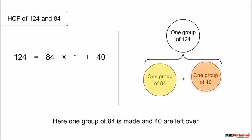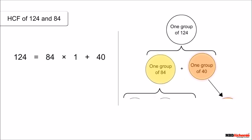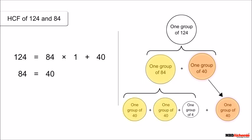If any number completely divides both 40 and 84, then it will also divide 124. Now let's write the lemma for the next division: 84 = 40 × 2 + 4. Two groups of 40 are made and 4 is left behind. This means if any number completely divides both 4 and 40, it will also divide 124 and 84.